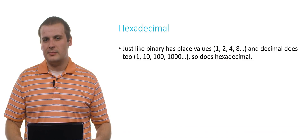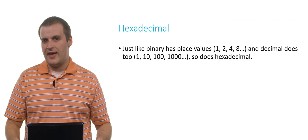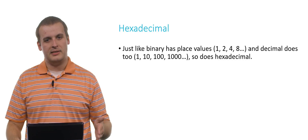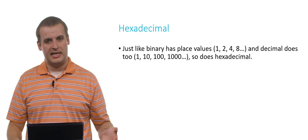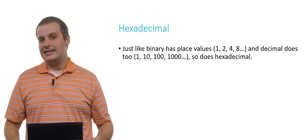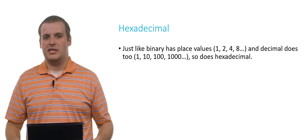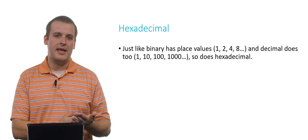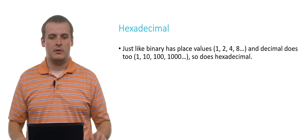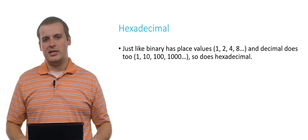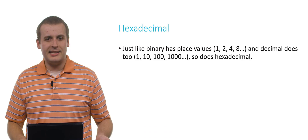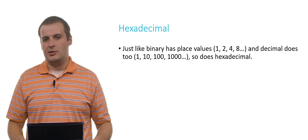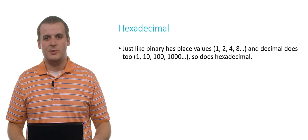So binary has place values — there's a ones place, a twos place, a fours place, and an eights place. And decimal also has place values: the ones, tens, hundreds, and thousands that we all may recall from grade school. And hexadecimal is no exception here — it also has place values.